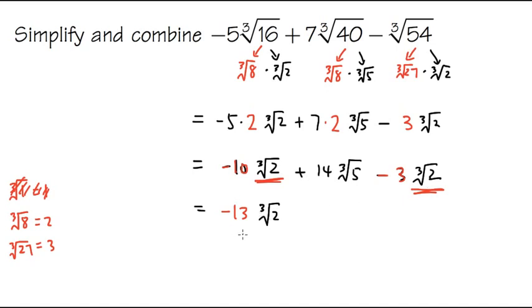This and that together will give us negative 13 cube root of 2. And I just need to write this down because the cube root of 5 is different. I cannot do anything with it, just 14 cube root of 5. This is the most that we can do. This is the answer.